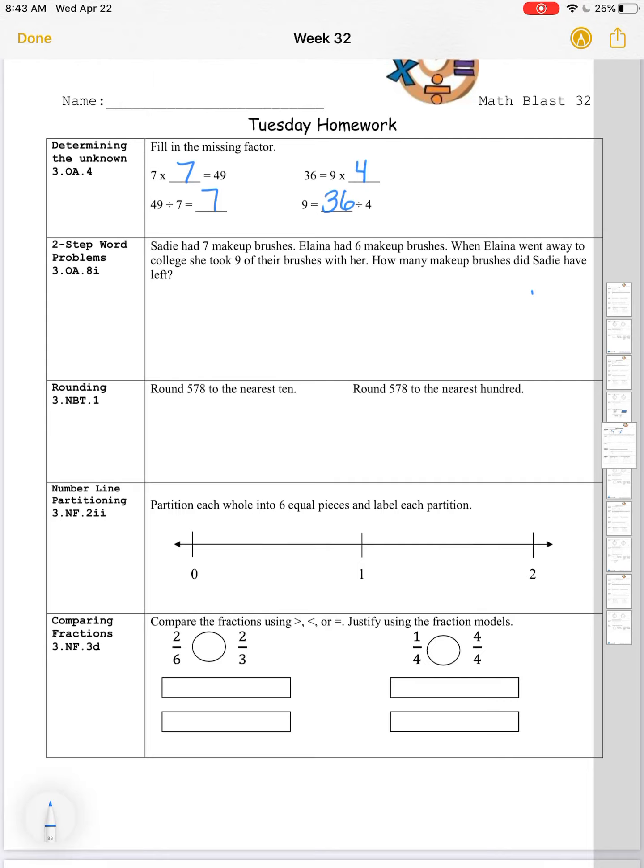Two-step word problems. Sadie had seven makeup brushes. Elena had six makeup brushes. When Elena went away to college, she took nine of their brushes with her. How many makeup brushes did Sadie have left? Okay, so first off, I know if Sadie had seven makeup brushes and Elena had nine makeup brushes, then I can put those together. We're going to add them to determine the total number of makeup brushes that both Sadie and Elena had. So seven plus nine is equal to 16. Now when Elena went away, she took nine of the brushes. So here we start out with the 16 brushes, and if she took nine, then we ask ourselves how many are left here. This would be a subtraction problem. 16 minus 9 is equal to 7. So we can say Sadie has seven brushes left.